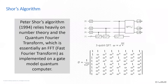Peter Shor, who was at the time a mathematician at Bell Labs, showed that factoring integers — which is a very hard problem — can actually be done quickly and efficiently using this model of a quantum computer. He combined a little bit of number theory with the fact that a quantum computer has a very easy time doing what's called a Fourier transform, or QFT. The quantum Fourier transform that sits on three qubit lines is an eight-by-eight matrix, and each of those numbers omega inside that matrix is an eighth root of unity.